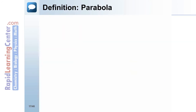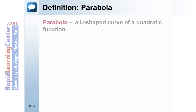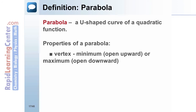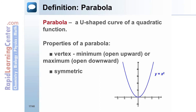A parabola is the graph of a quadratic function. One property of a parabola is that its vertex is the maximum or minimum value of the function. Another property of a parabola is that it is symmetric. For example, the graph of y equals x squared shows the related graph is symmetric about the y-axis. This is also the line where the vertex lies.